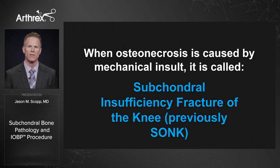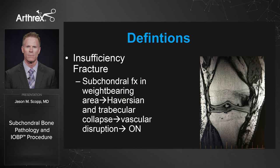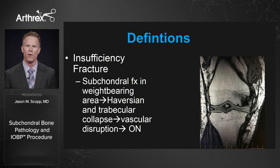When osteonecrosis is caused by a mechanical insult, it is called a subchondral insufficiency fracture of the knee — previously called SONK. An insufficiency fracture is a subchondral fracture in the weight-bearing area of the knee. It occurs by Haversian and trabecular collapse, which leads to vascular disruption and ultimately osteonecrosis.